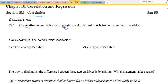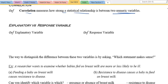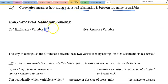Correlation measures how strong a statistical relationship is between two numerical variables. We have explanatory variable, and we have response variable, and that is the outcome variable.